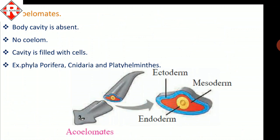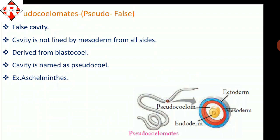The second group is acoelomates — body cavity is absent or filled with cells. There is no coelom present. Examples of acoelomates are organisms from phyla Porifera, Cnidaria, and Platyhelminthes. In the cross-section of these animals, you cannot find any body cavity between the layers — ectoderm is the outermost layer, endoderm is the innermost, and mesoderm is the middle layer.